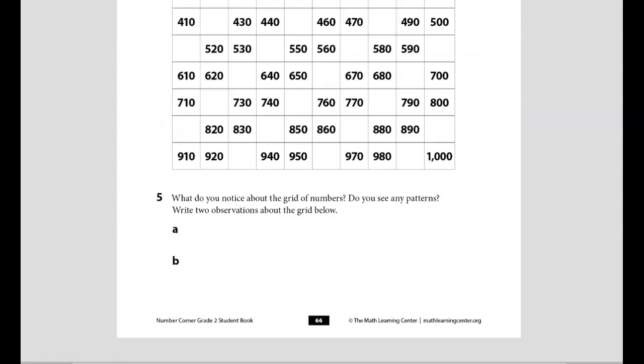When you get to number 5, you are going to look back at the grid from number 4. Think about any patterns you might see. Then you're going to write down two observations about the grid. That's how we'll celebrate our 100th day of school in Number Corner. Thanks for counting with me. Now it's your turn to go celebrate in your Number Corner book. Turn this in on FISA to show your teacher when you're all done. See you next time for Number Corner.